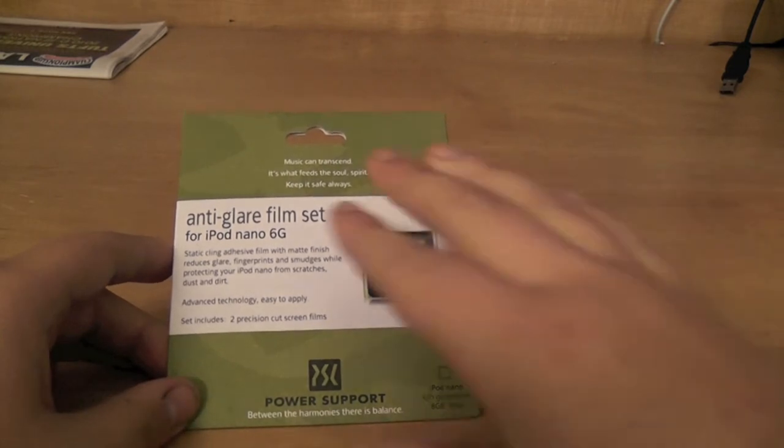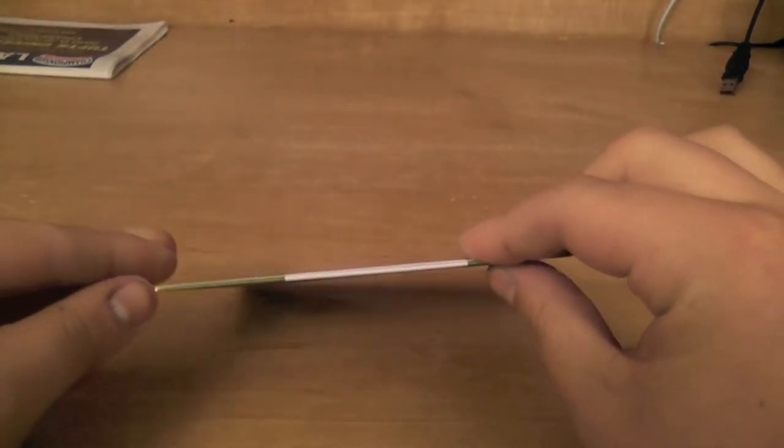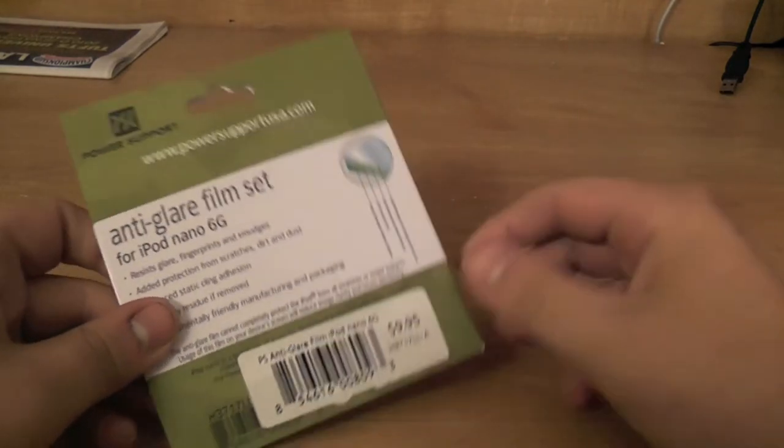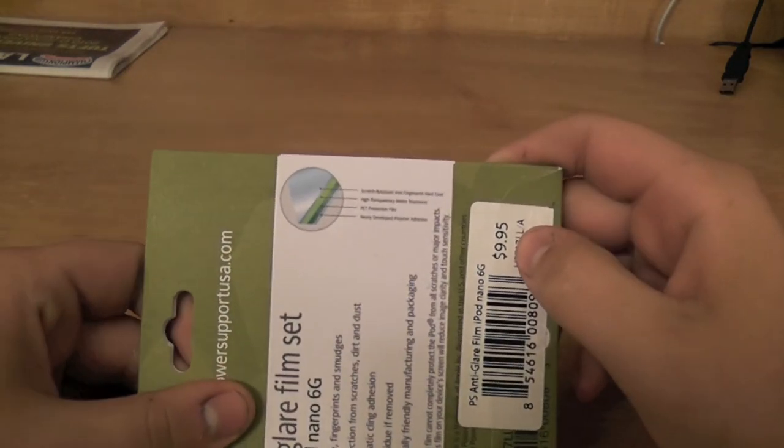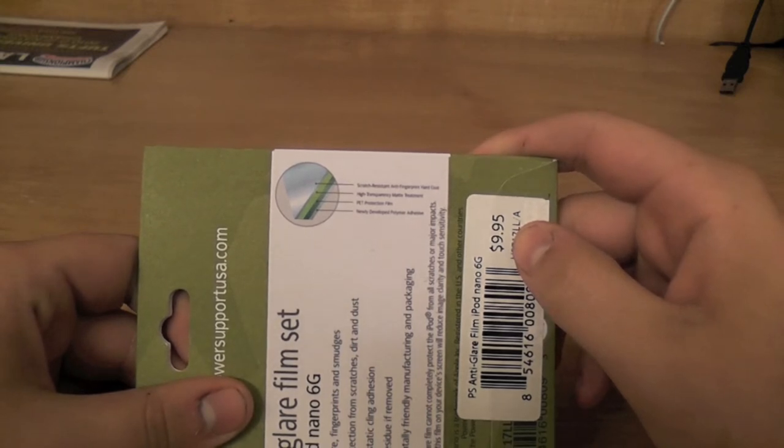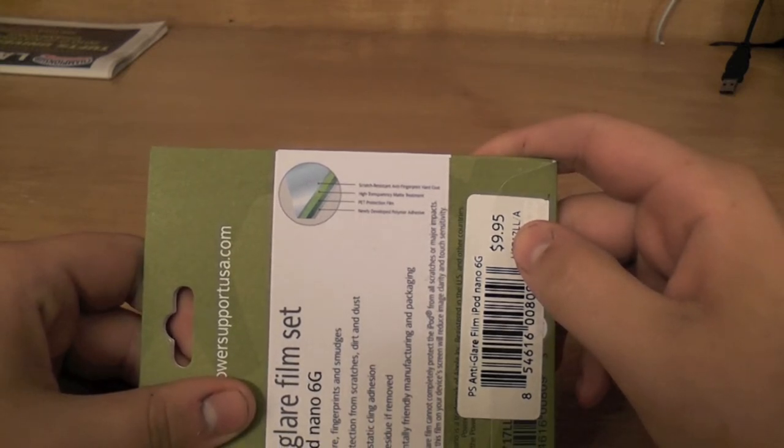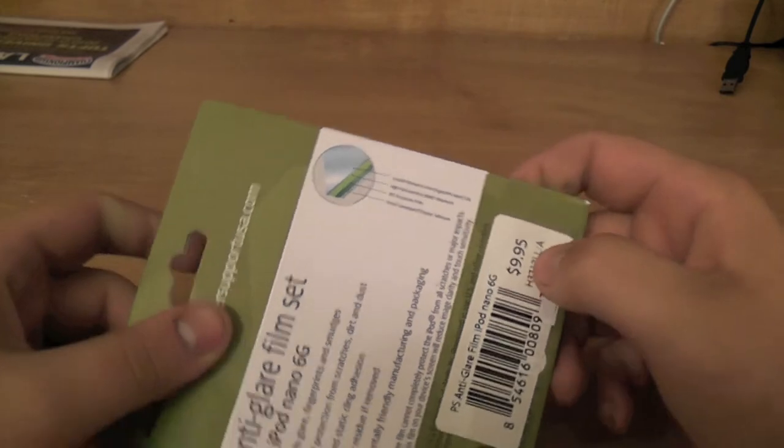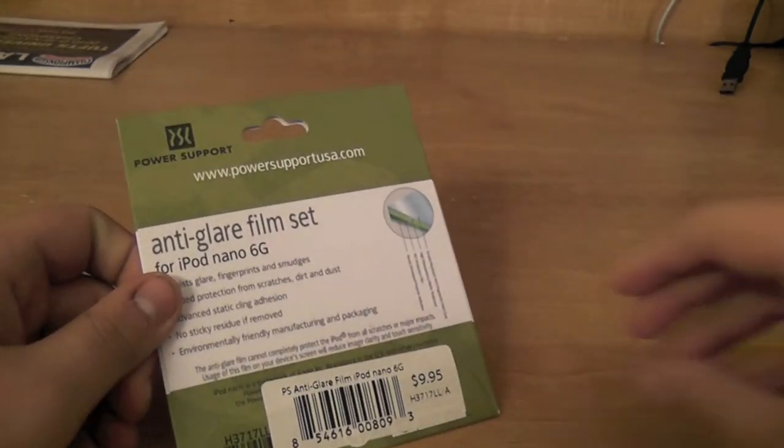So here's the front of it. It's very thin because there's just the film sets in there and it talks about the technology in it. It says it has a scratch resistant anti-fingerprint hard coat, a high transparency matte treatment, a PET protection film, and a newly developed polymer adhesive that uses static to actually cling to the screen.